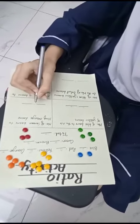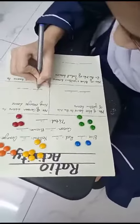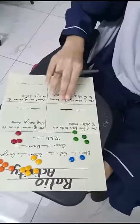Number of green beans to the number of orange beans. How many are green? Four. And how many are orange? Four. Then, four ratio four is the answer.